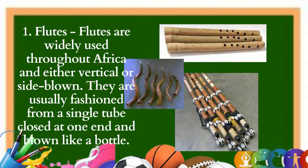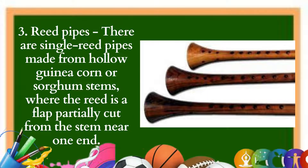3. Reed pipes: There are single reed pipes made from hollow guinea corn or sorghum stems where the reed is a flap partially cut from the stem near one end. The vibration of this reed causes the air within the hollow instrument to vibrate, creating the sound. There are also cone-shaped double reed instruments similar to the oboe. The most well-known is the rhaita or guida, an oboe-like double reed instrument from Northwest Africa, one of the primary instruments used by traditional music ensembles from Morocco. The rhaita was even featured in the Lord of the Rings soundtrack, specifically in the Mordor theme.